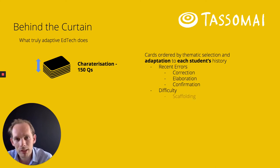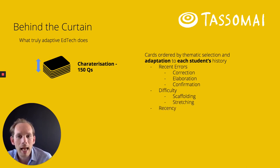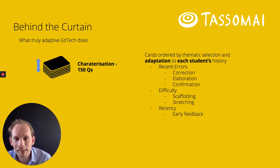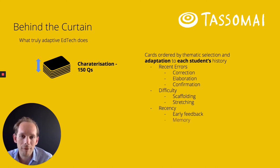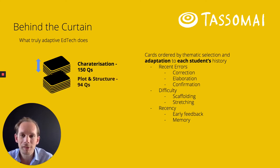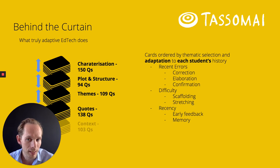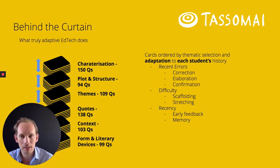It's tailoring for difficulty — scaffolding the content or stretching you where you're showing improvement. It uses a recency bias to make sure that feedback can be actioned quickly, and then later that knowledge is moved into long-term memory.